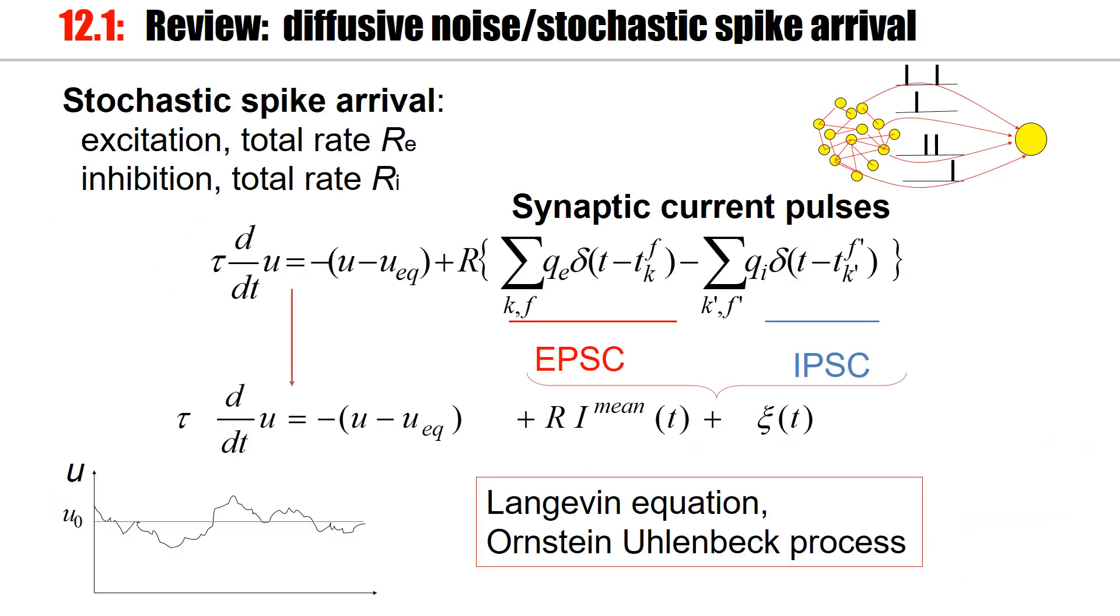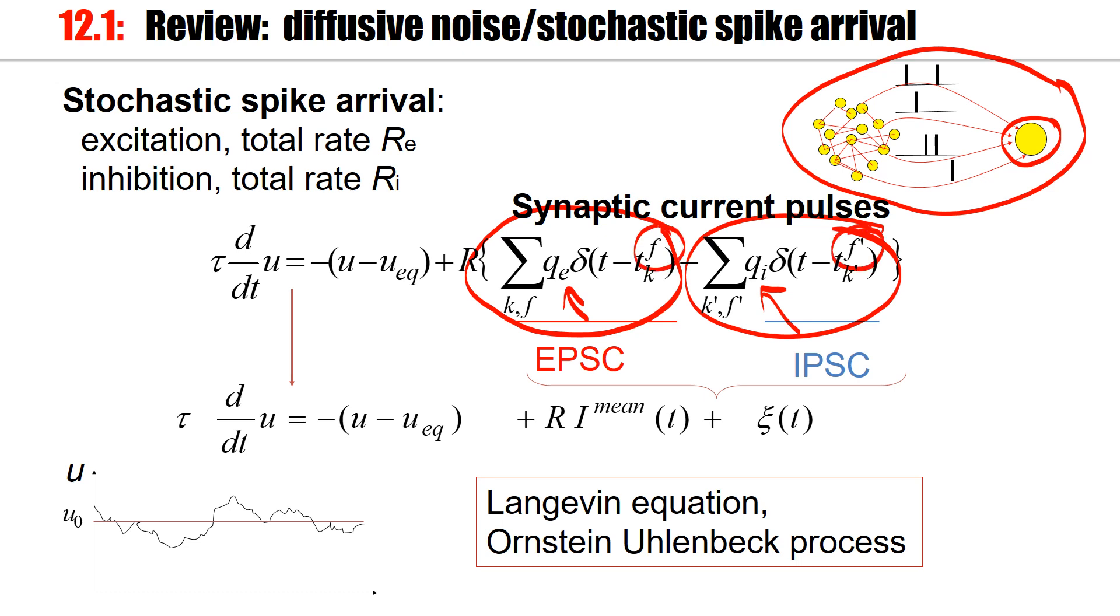Now, within the network, communication is via spikes. So I pull out one of these neurons, it's driven by spike arrivals. We will look eventually at the most general case, where spike arrivals are of two types. There are excitatory spike arrivals that put in a charge QE. And then there are inhibitory spike arrivals that put in a charge QI. F or F prime are the firing times. K or K prime are different presynaptic neurons or different types of neural groups.